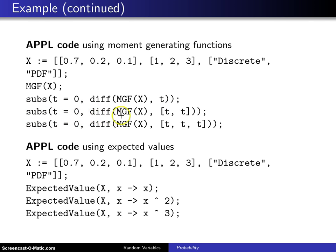When you plug t equals 0 into the third derivative of the moment generating function, that gives you 5, which is the expected value of X³.